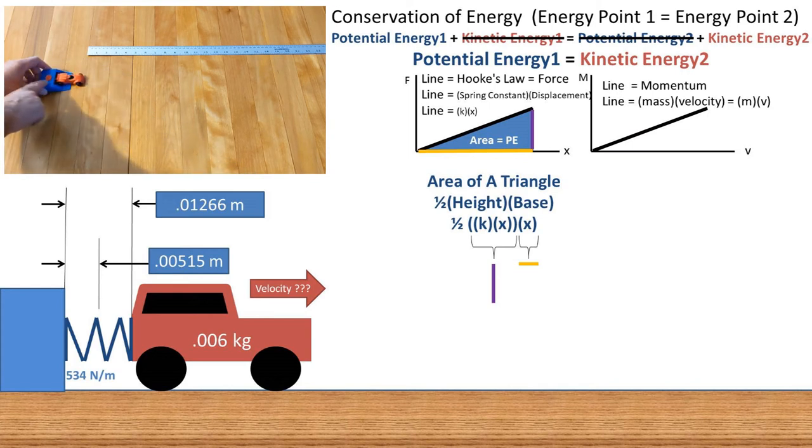Now for our kinetic energy, we will plot the line for momentum, which is mass times velocity. The momentum is the y-axis, and the velocity is the x-axis. The area underneath this line once again is the energy, but this time the kinetic energy.